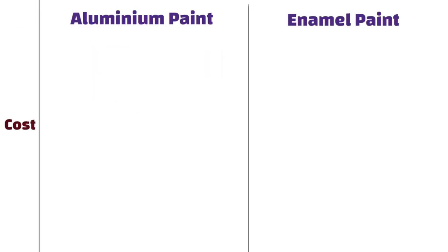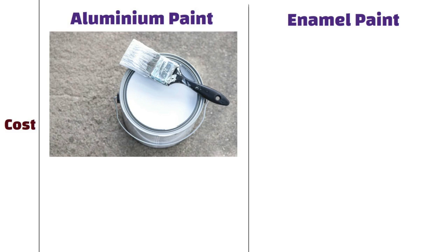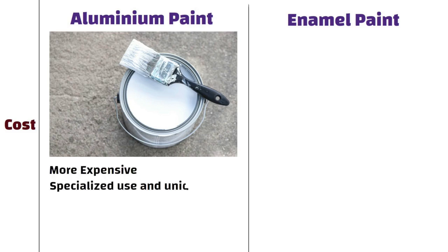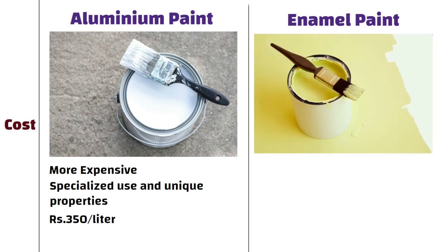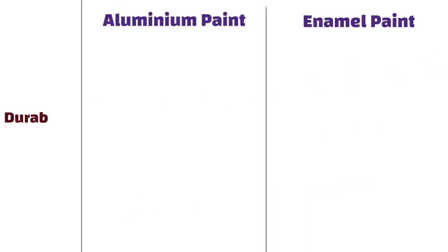Cost. In terms of cost, aluminum paint is often more expensive primarily due to its specialized use and unique properties. Its price is approximately ₹350 per litre. On the other hand, enamel paint is more budget-friendly and readily available in a variety of price ranges. Its price is approximately ₹300 per litre.